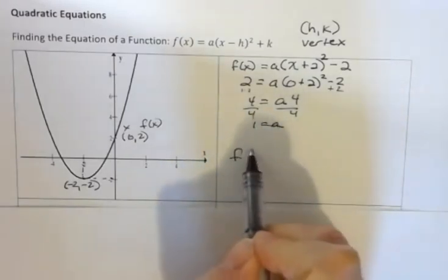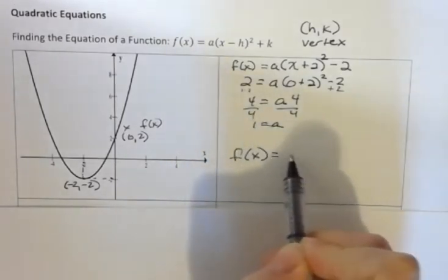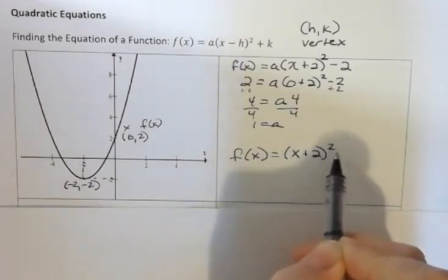And if I divide both sides by 4, I get 1. So in this case, a is 1. So my function is x plus 2 squared minus 2.